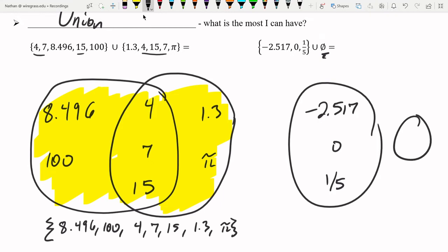So the union is as much as possible from both sets. That's going to be all this stuff. And this stuff, but there's nothing in there. So that's not going to really add anything. Therefore, the union is just 2.517, 0, and 1 fifth.